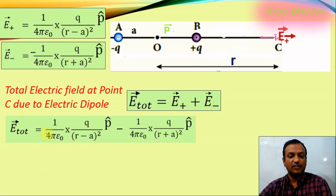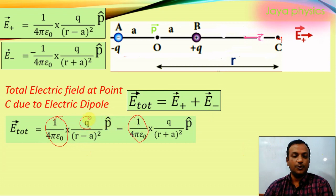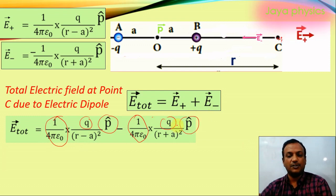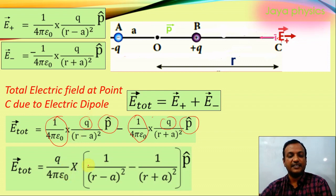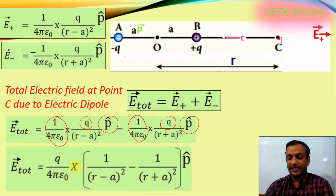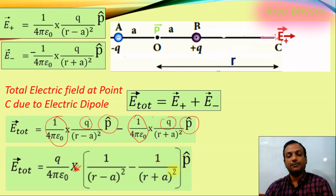To find the total field, we take E plus minus E minus — subtracting because they act in opposite directions along the same line. What is common in these two terms? 1 by 4πε₀ and q are common. We take LCM of the denominators: (r minus a)² and (r plus a)².